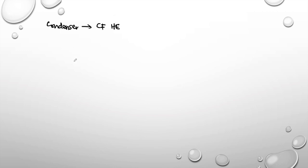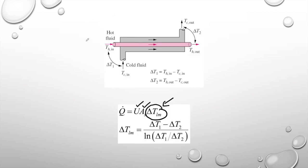We have to find delta T1 and delta T2. For the condenser, we treat it as a counter flow heat exchanger. For counter flow, T_h,in is on one side, T_h,out is on the other side, T_c,in is here, and T_c,out is on the opposite side. The figures previously shown were for parallel flow, but the condenser is treated as a counter flow heat exchanger.